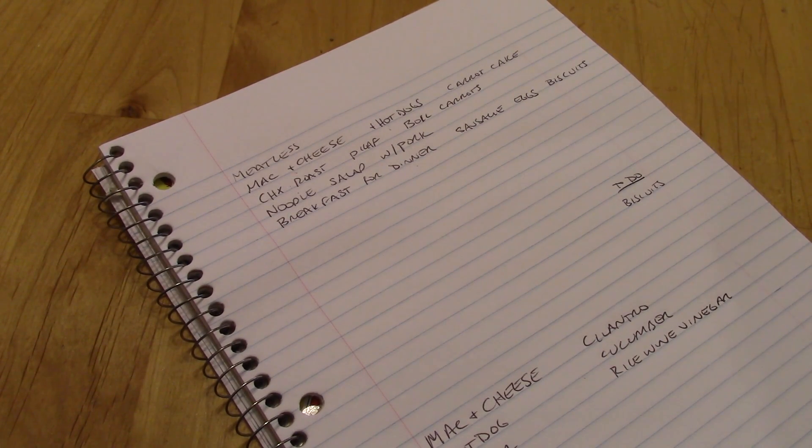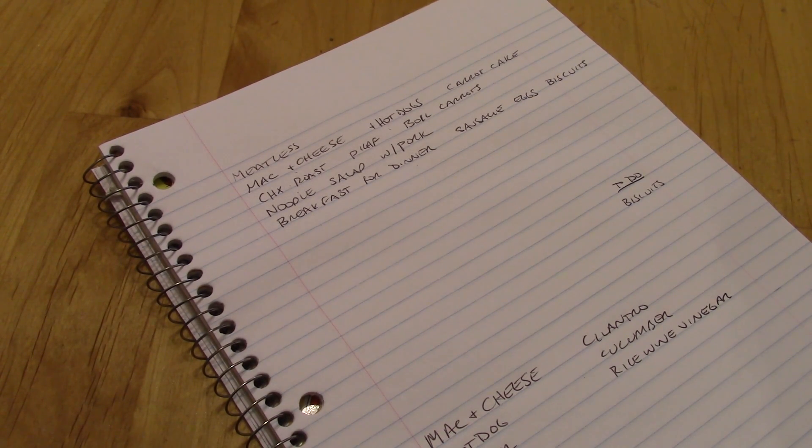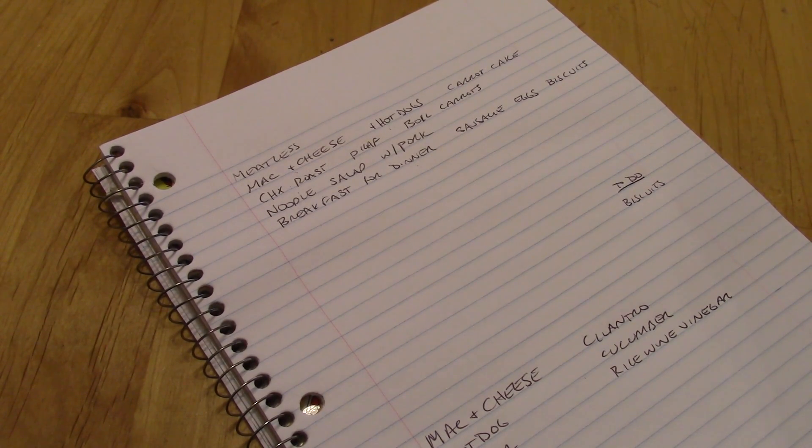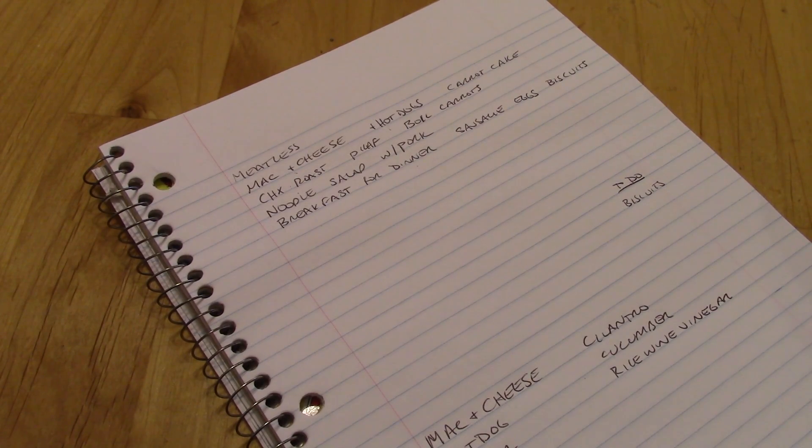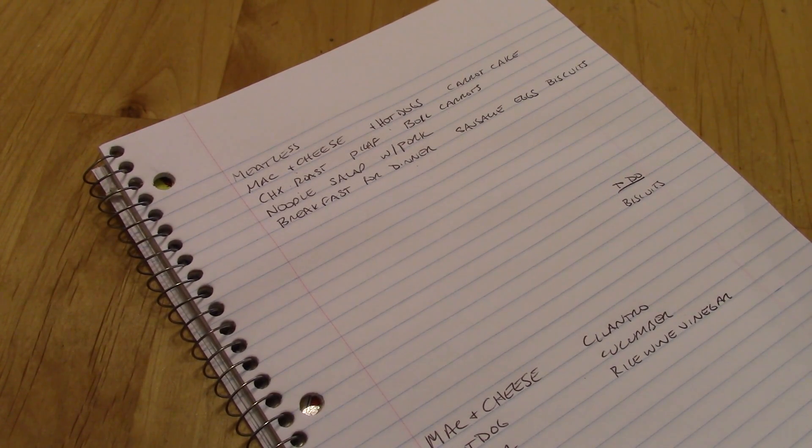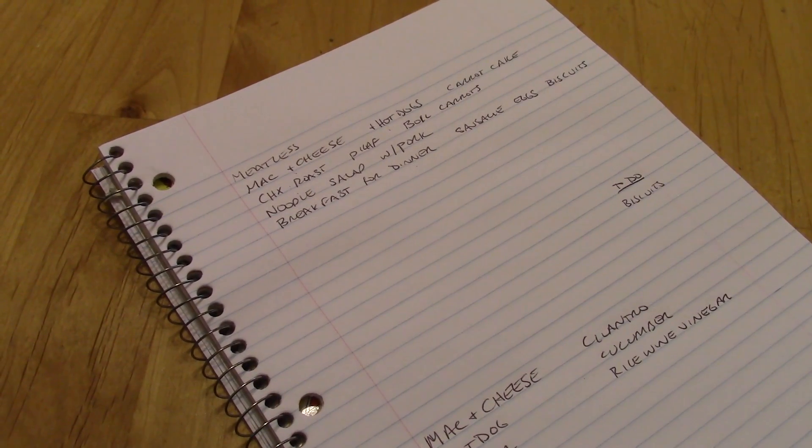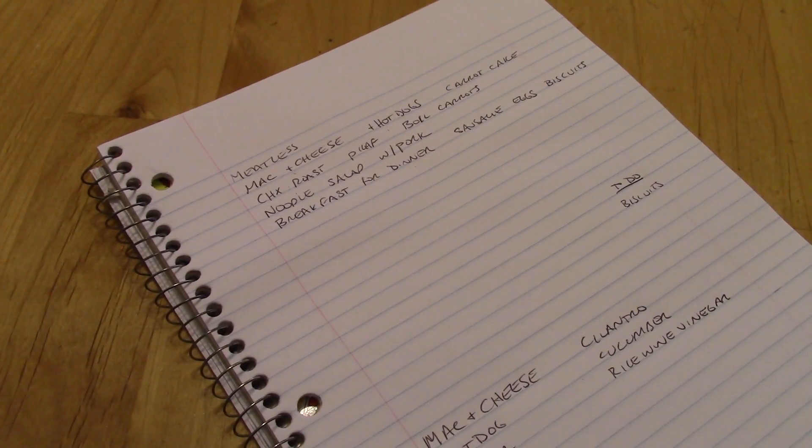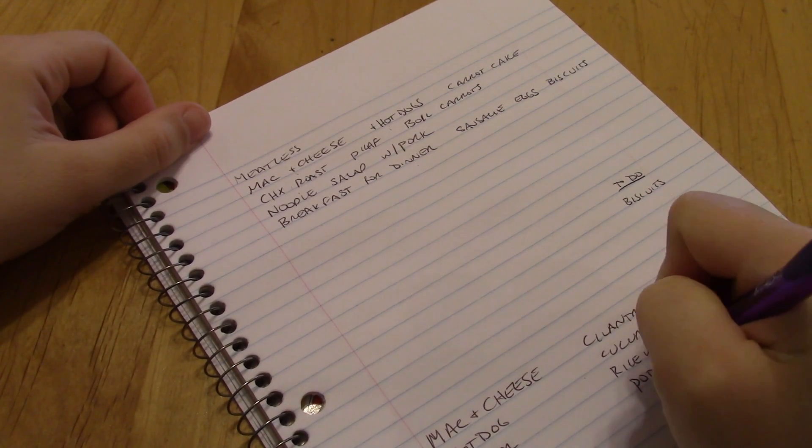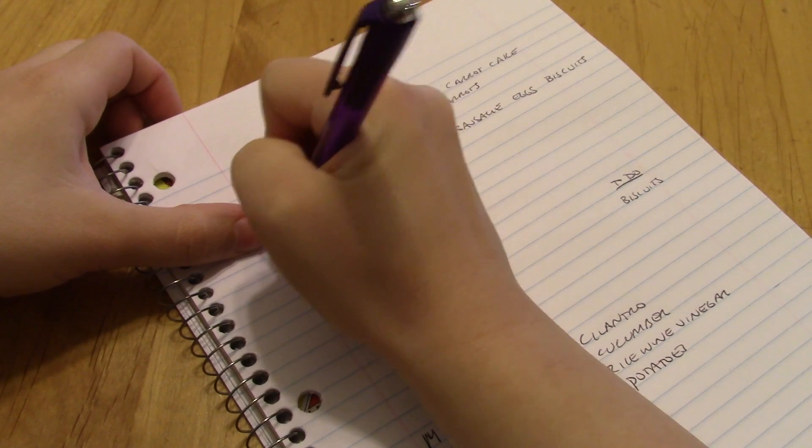We usually end up having at least one ground beef meal every week because we have so much ground beef from our cow order. So maybe we'll just have hamburgers because that's something my husband was asking about the other day. Hamburgers and maybe, we're having nicer and nicer weather, so maybe something summery like a pasta salad or a potato salad. I think I have some potatoes. I have a small amount of potatoes. I'm going to go ahead and say potatoes here. And we'll do that. Hamburgers and potato salad.